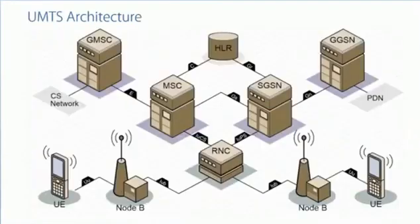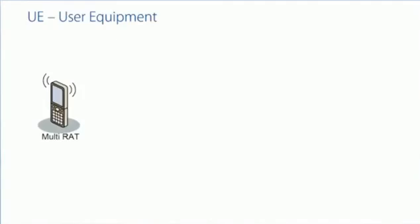Here's a very simplified view of the key functions you'll find in a UMTS network. Let's start with the user equipment, the mobile. The mobile in UMTS is called the user equipment, or the UE, unlike GSM where it's called the mobile station. We'll also hear the term multi-RAT, multi-radio access technology.